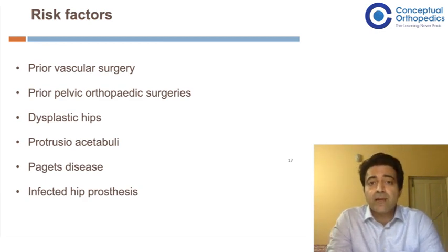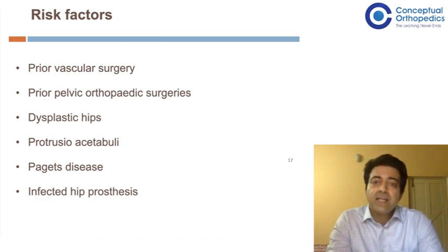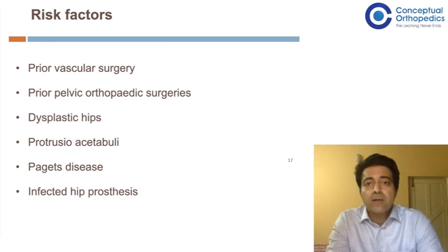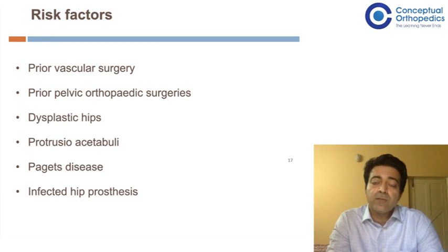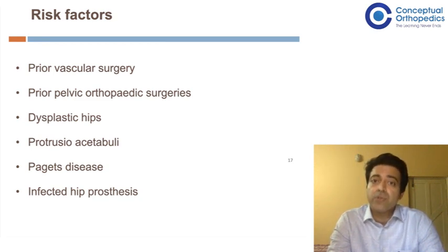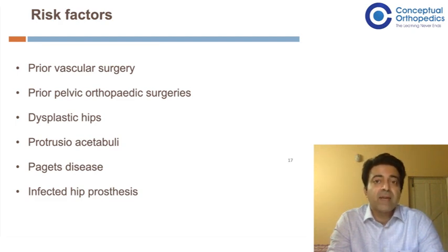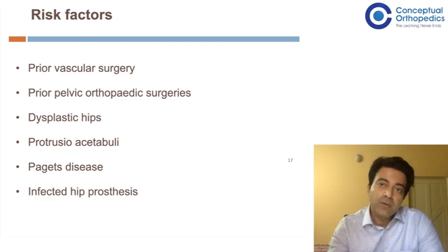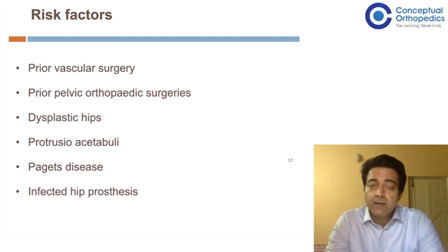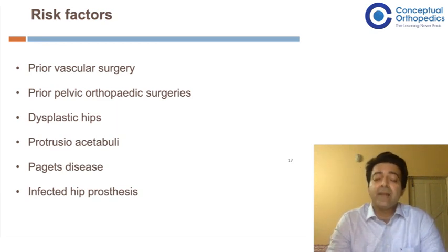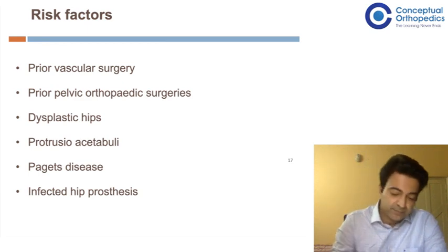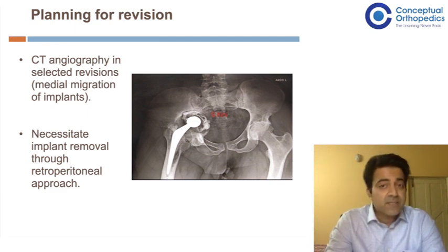Risk factors for vascular injury include prior vascular surgery, prior pelvic orthopedic surgeries with poor plane delineation, dysplastic hips, and protrusio acetabuli — especially with a soft medial wall where you can easily breach it and encounter the external iliac vessels. In protrusio, you must never go to the floor; always aim for the rim and periphery, achieve a peripheral fit, graft, and build up the wall. Paget's disease and infected hip — where vascularity is very high — are similar risk factors.